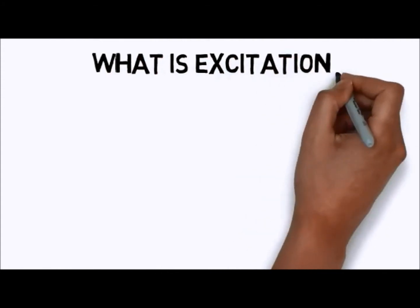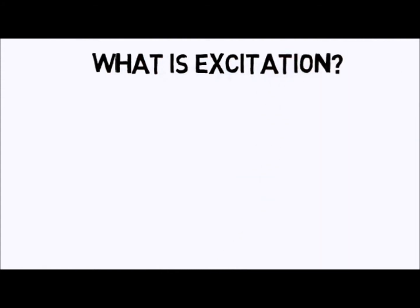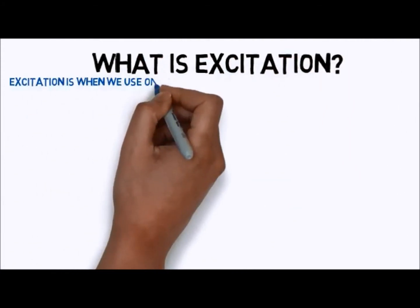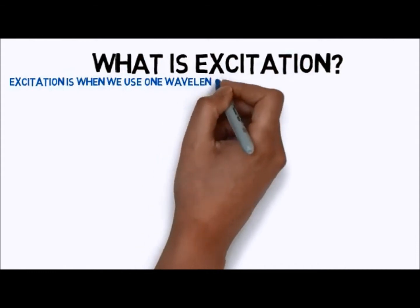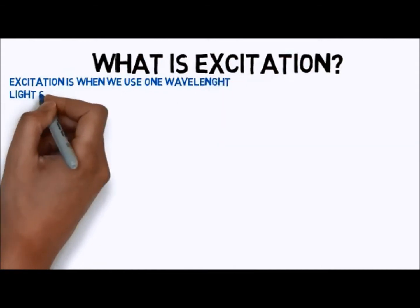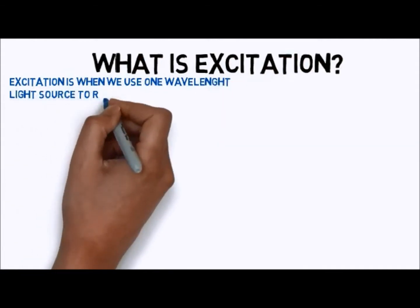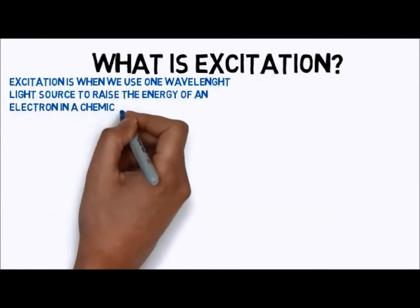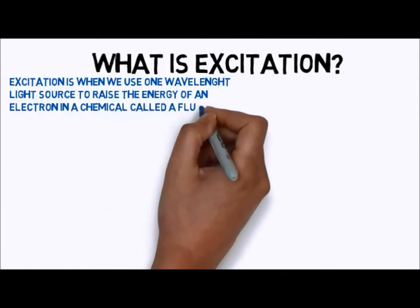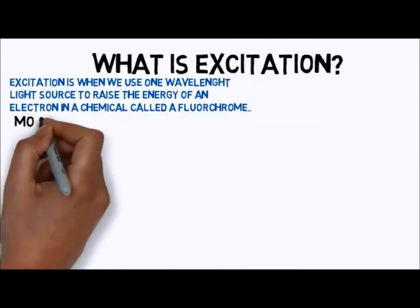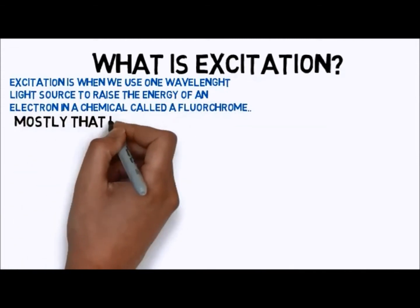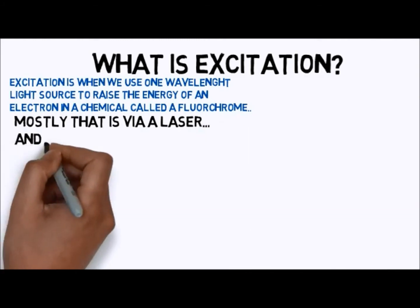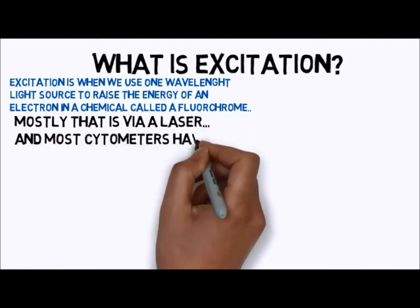So what is excitation? You get excitation when you use a particular wavelength light source to raise the energy of an electron in a molecule called a fluorochrome or a chromophore. We mostly use lasers in flow cytometry, so let's concentrate on lasers in this tutorial.